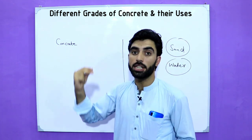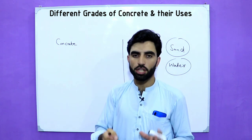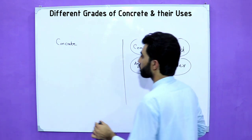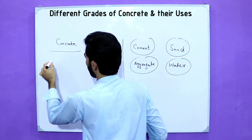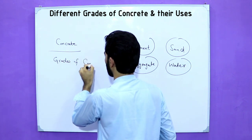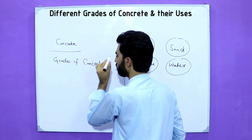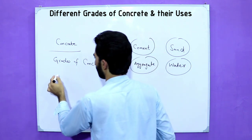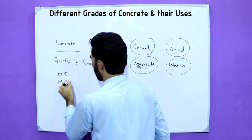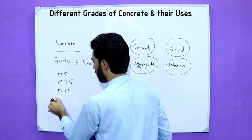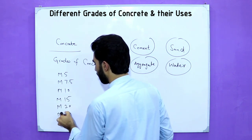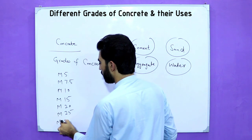Now we have different types and different grades of concrete. The grades of concrete are M5, M7.5, M10, M15, M20, M25, M30, and so on. These are the grades of concrete.